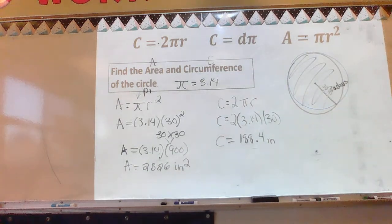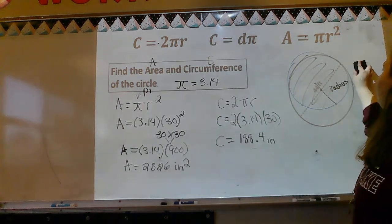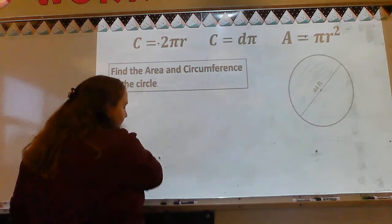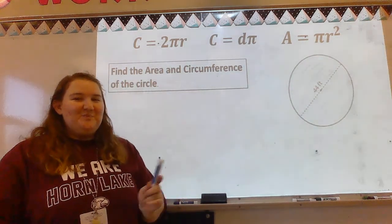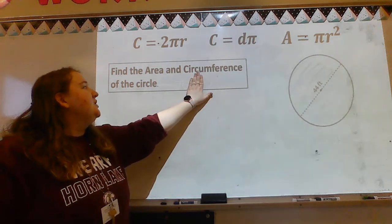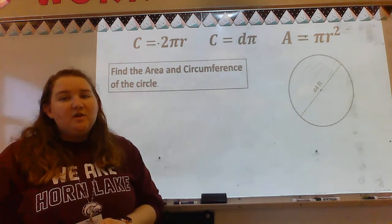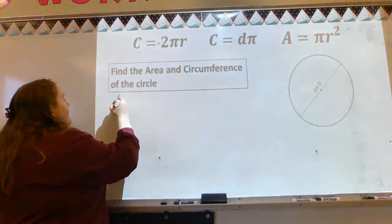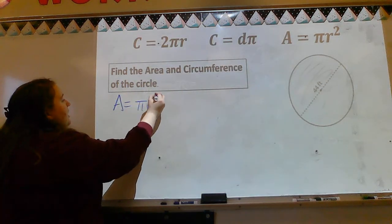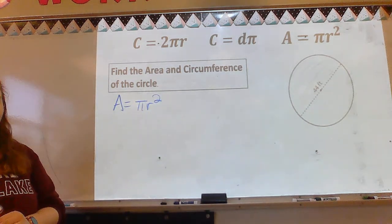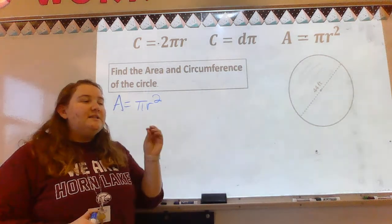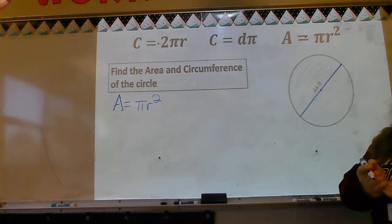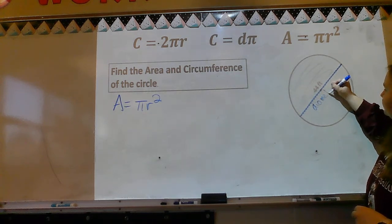We're going to do one more example. Same type of problem, different circle. Find the area and circumference of the circle. Area is the inside, so I have one formula for area: area equals pi r squared. Now, looking at this circle, they have a line cutting it in half — that tells me this is a diameter.